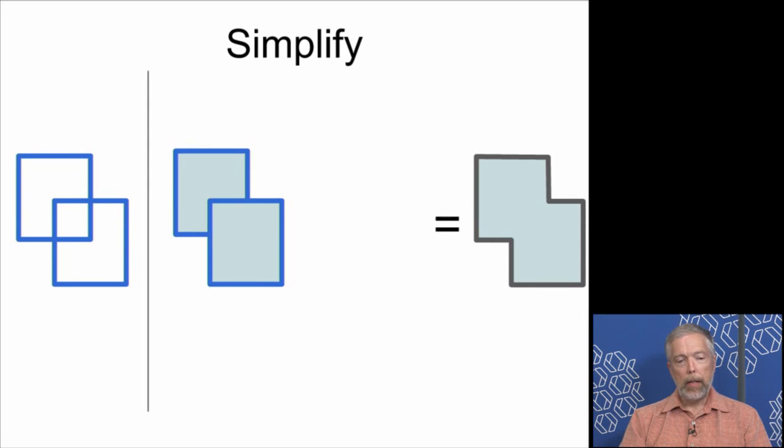Here, this simplify operation takes a pair of blue rectangles and will compute the area that would result from drawing both of them. This is the simplest PathOp.